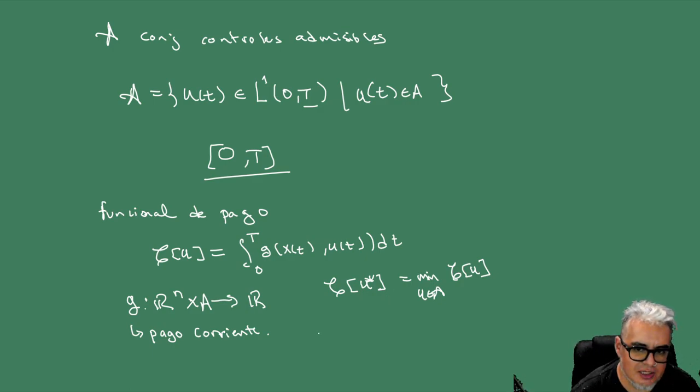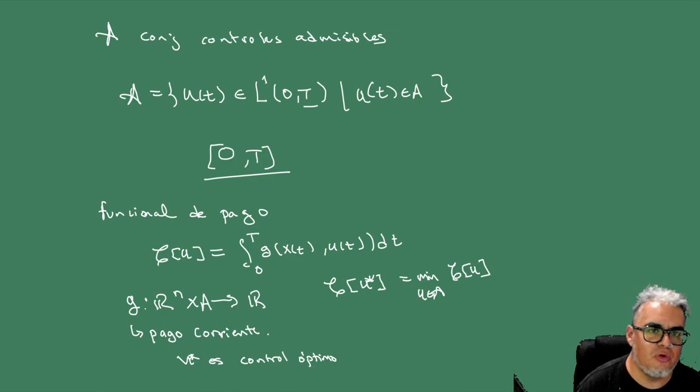¿Quién es esa G? Es una función dada que va de R^n cruz el espacio donde viven los controles, y nos va a dar un valor real. La T mayúscula debería ser conocida y la G es la función de pago corriente. Y lo que quisiéramos hallar es una U estrella tal que cuando le aplicamos esa función de pago nos va a minimizar el valor de la funcional para todo el conjunto de controles admisibles. Cuando esta U estrella existe, es llamada el control óptimo.